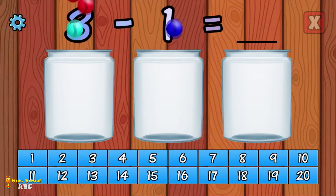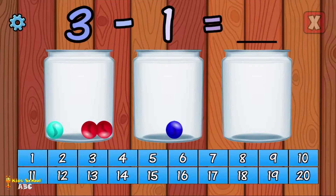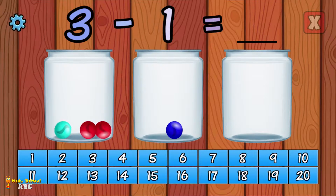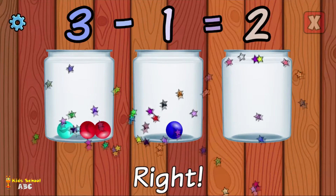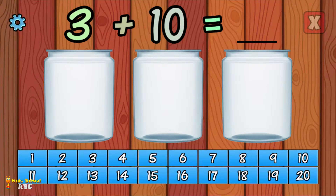What is 3 minus 1? Right! 3 minus 1 equals 2.